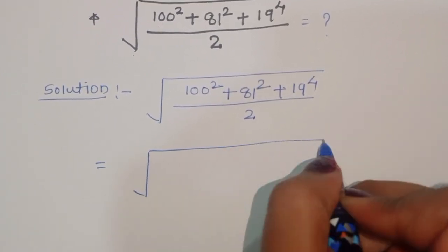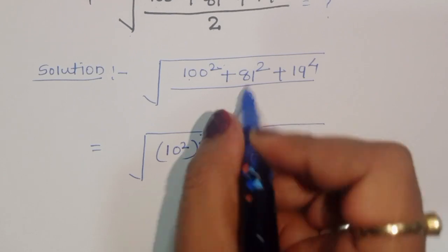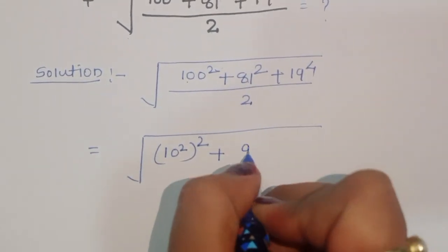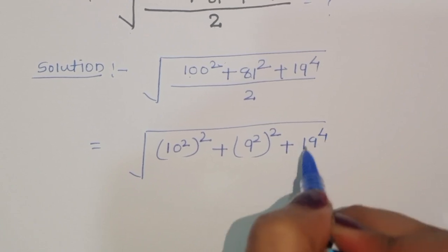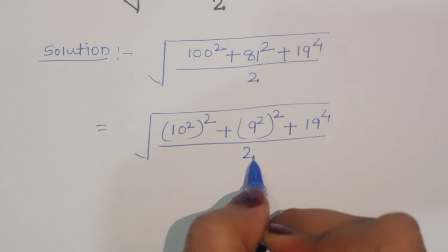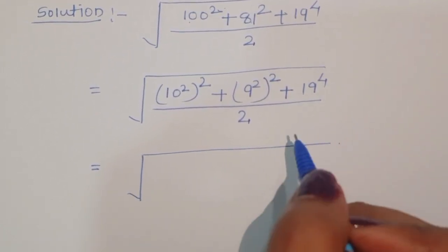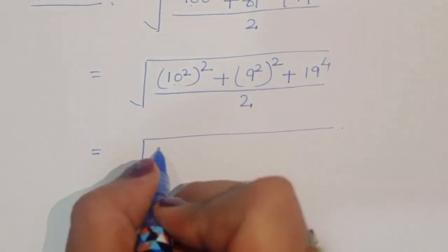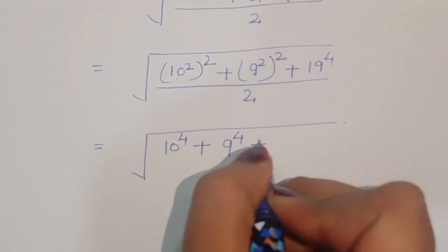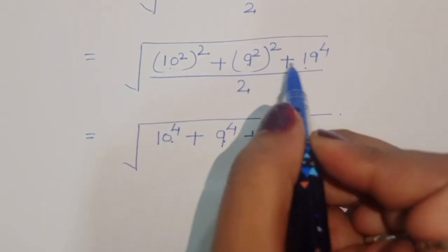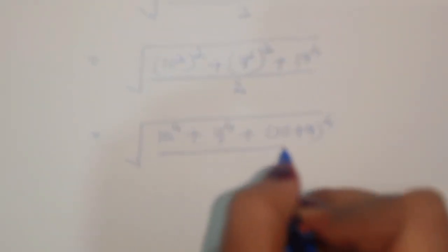We can write 100 squared as (10²)², so 10 to the power 4. Then 81 squared we write as (9²)², so 9 to the power 4. And 19 we can write as 10 plus 9, so we have 10 plus 9 to the power 4 divided by 2.